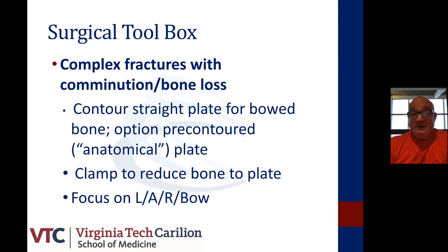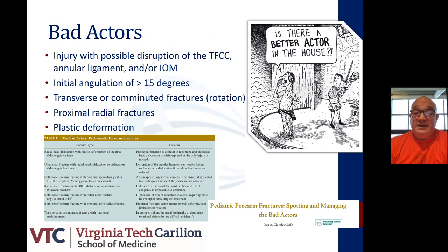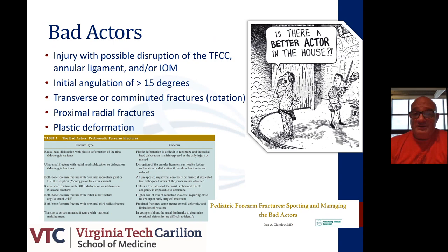The bad actors in these injuries — we'll mention three: the Essex-Lopresti injury, the Monteggia fracture, and the Galeazzi fracture. Bad actors tend to be seen when you have disruption to the TFCC complex, the annular ligament, or the interosseous membrane. Initial angulation greater than 15 degrees is associated with bad outcomes. Severely comminuted fractures and transverse fractures tend to be rotationally unstable. Proximal radial fractures can be difficult to treat, and in young adults and pediatric patients, plastic deformation may also be a bad actor.